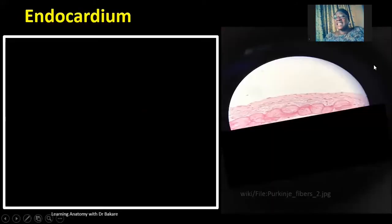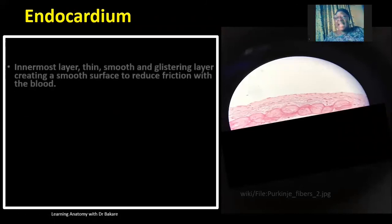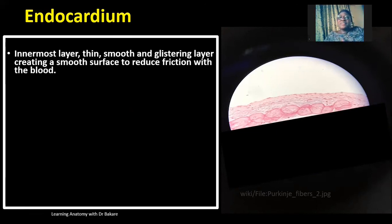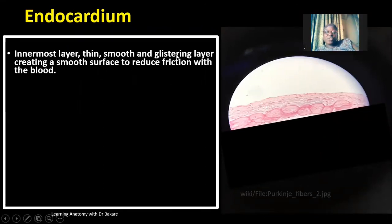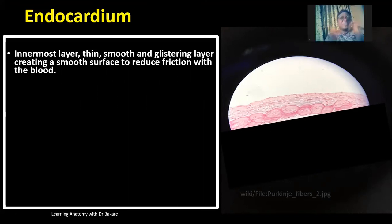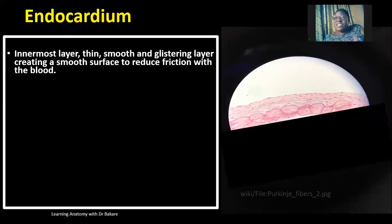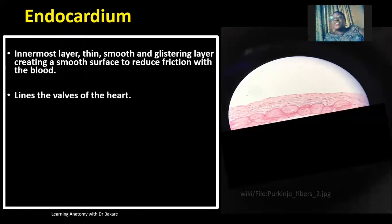The last layer is the endocardium — the most internal layer. This layer appears to be very thin, smooth, and glossy. When you look at the internal lining of the heart, you see it appears very shiny. This glossy nature allows for easy movement of blood within the cavities of the heart and reduces friction between the wall of the heart and blood. Apart from lining the interiors of the heart, the endocardium also lines the septum and the valves.